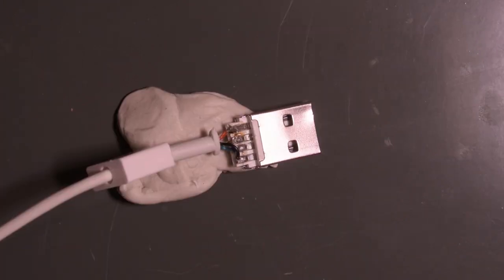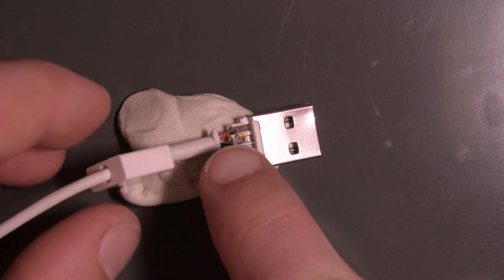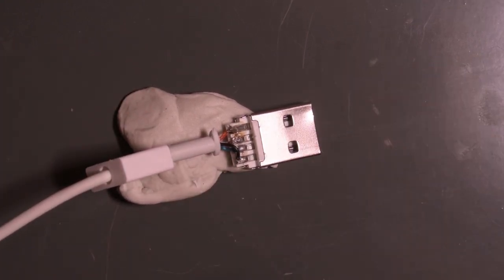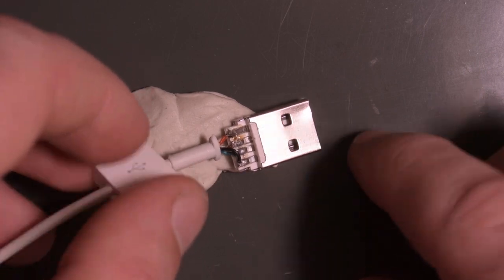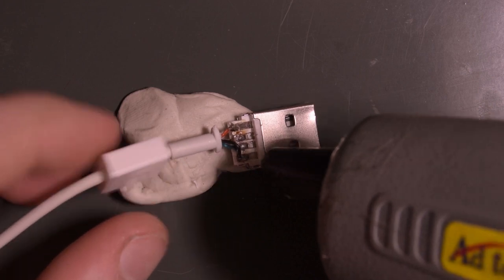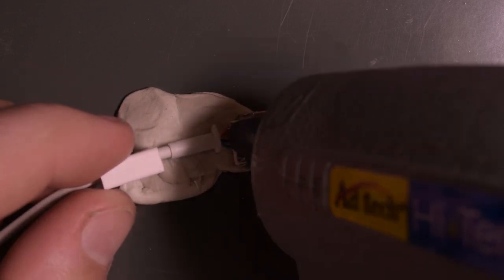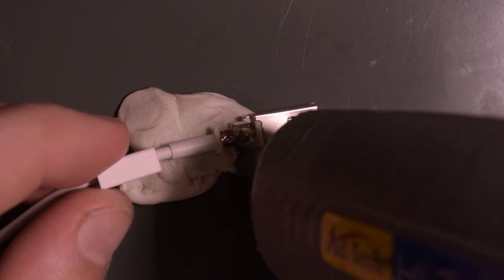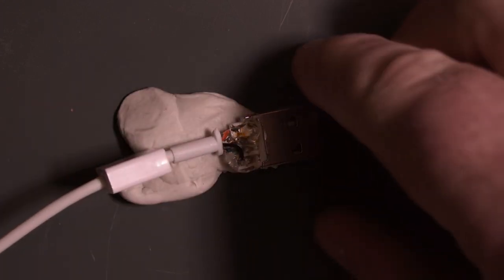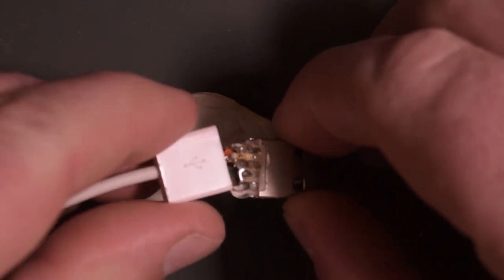All right, hot glue gun is warmed up. So the plan would be to get all these four wires encapsulated. And while the hot glue is still hot and molten, I'm going to slide this cap over. I may burn myself, but hey, that's what you guys are here for, right? So here it goes. I'm going to put a nice generous gob because I can always cut off the excess after.